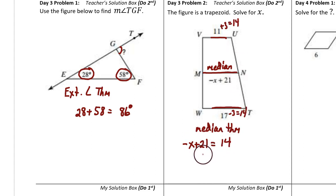From this equation we can solve for X. First subtract 21 from both sides getting negative 7. Then divide both sides by a negative getting 7. X equals 7.